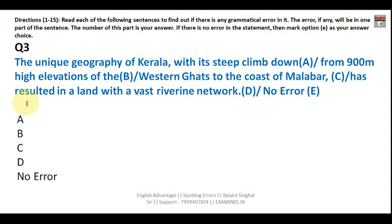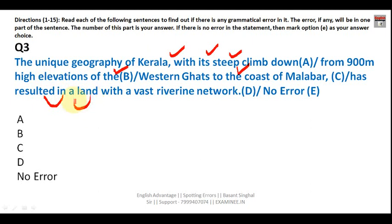Next question: 'The unique geography of Kerala, with its steep climb down from 900-meter high elevation of the Western Ghats to the coast of Malabar, has resulted in a land with a vast riverine network.' Going through the sentence: 'the unique geography' is correct; 'Western Ghats' is correctly preceded by 'the'; 'the coast of Malabar' is also correct; 'resulted in' is correctly followed by the preposition 'in'; 'a land' is correct.